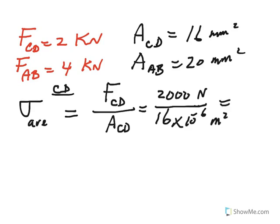Newton per meter squared is Pascal, which is the unit of pressure or stress. 2,000 divided by 16 becomes 125. The 10 to the negative 6 goes up, becomes 10 to the positive 6 or mega Pascal.